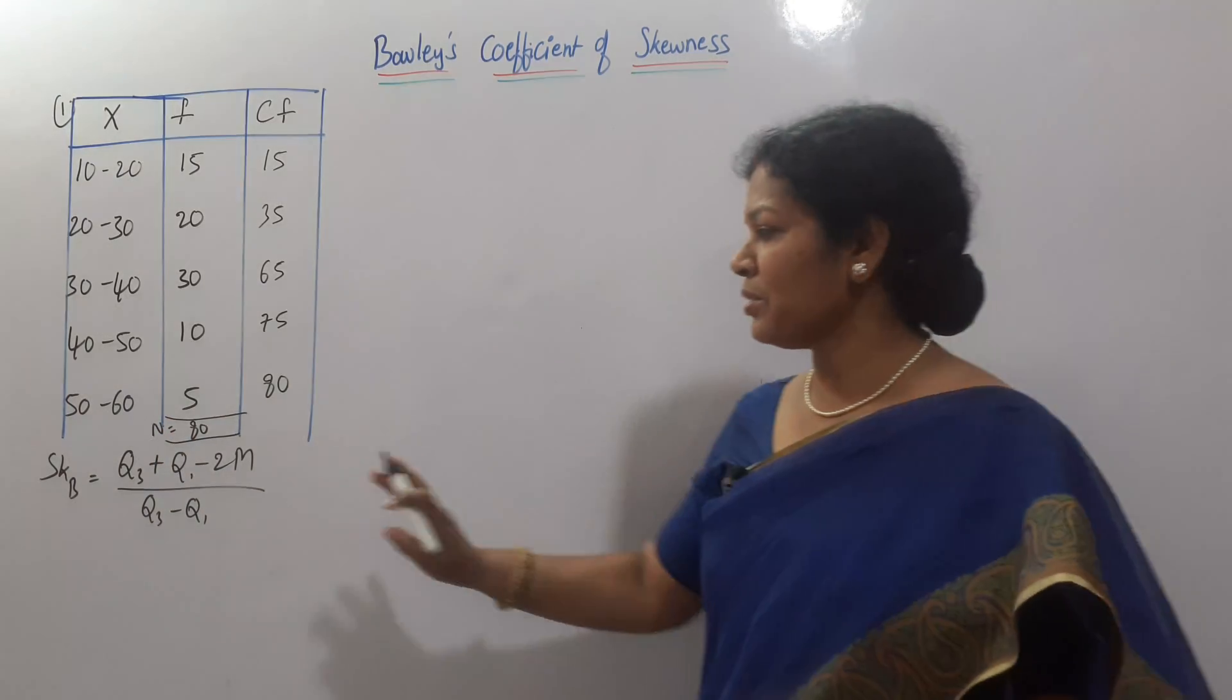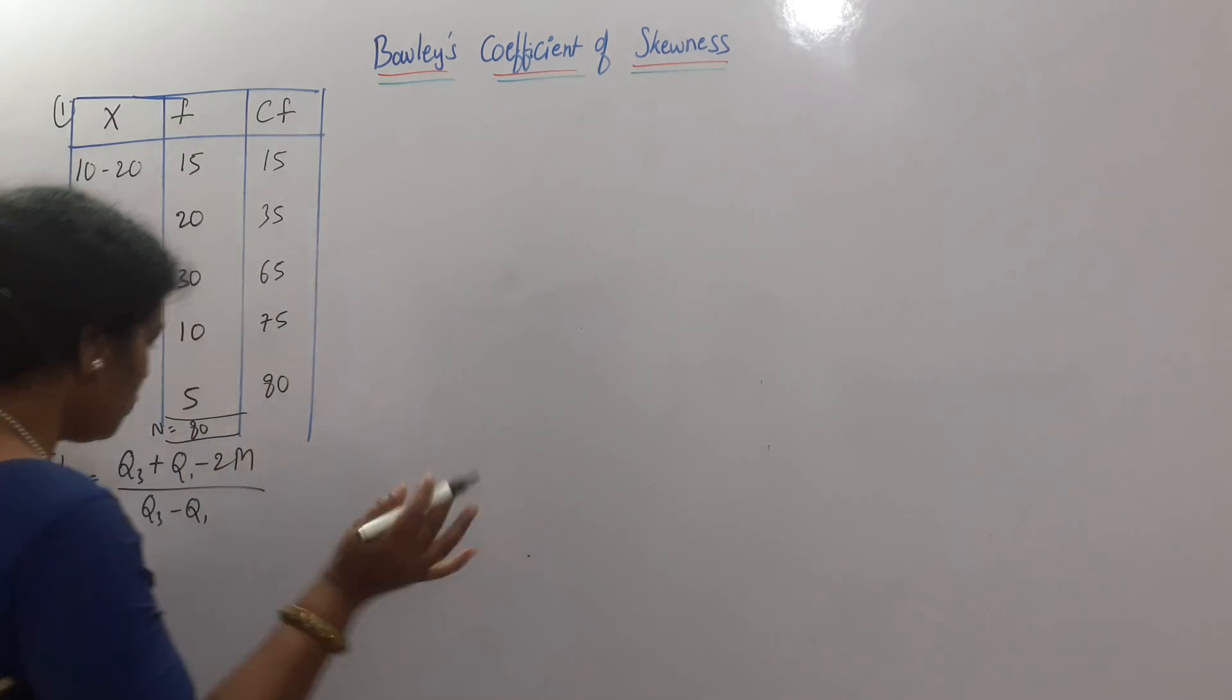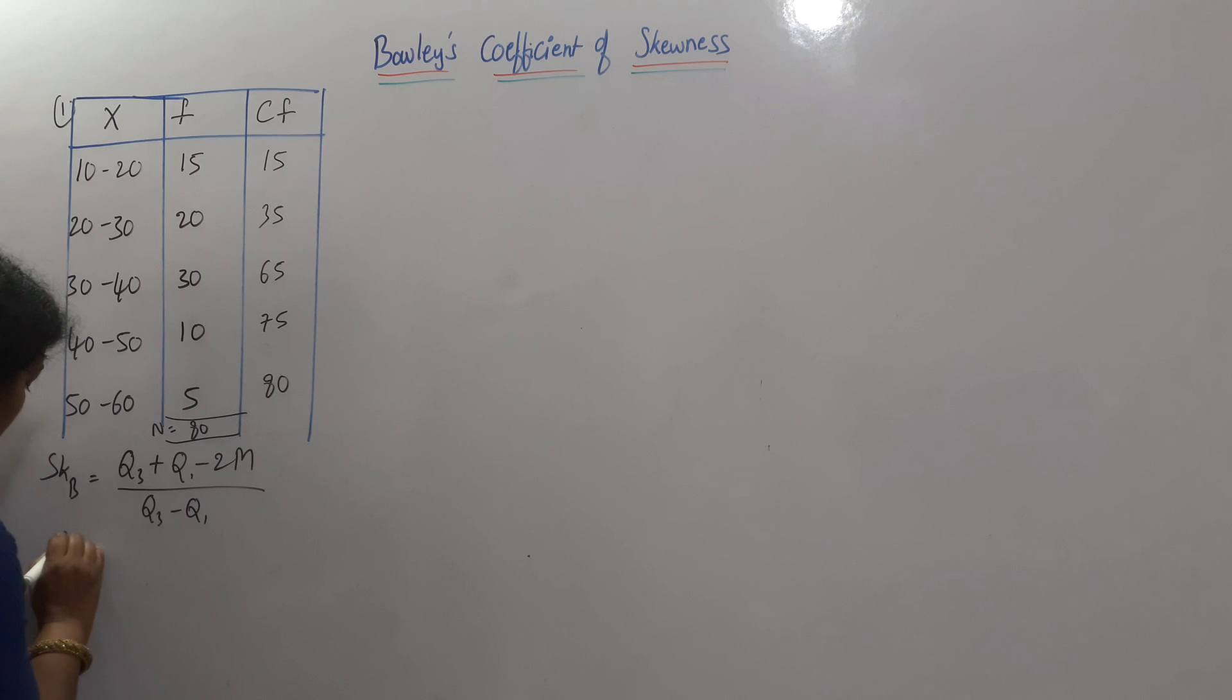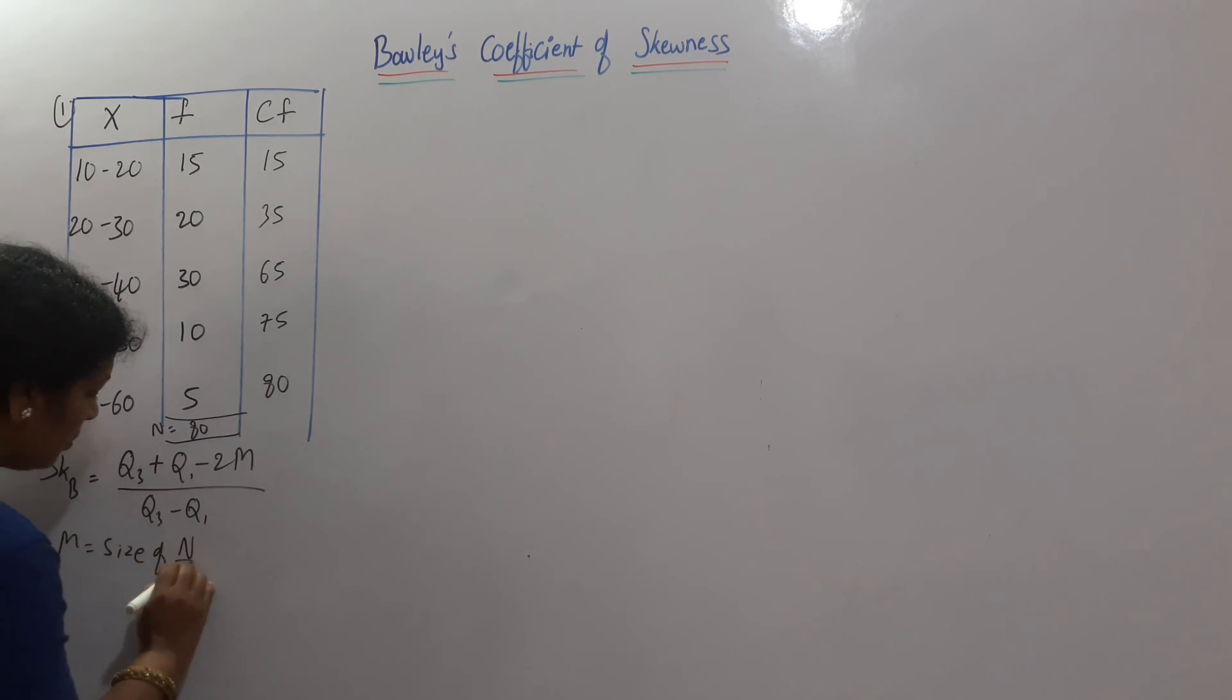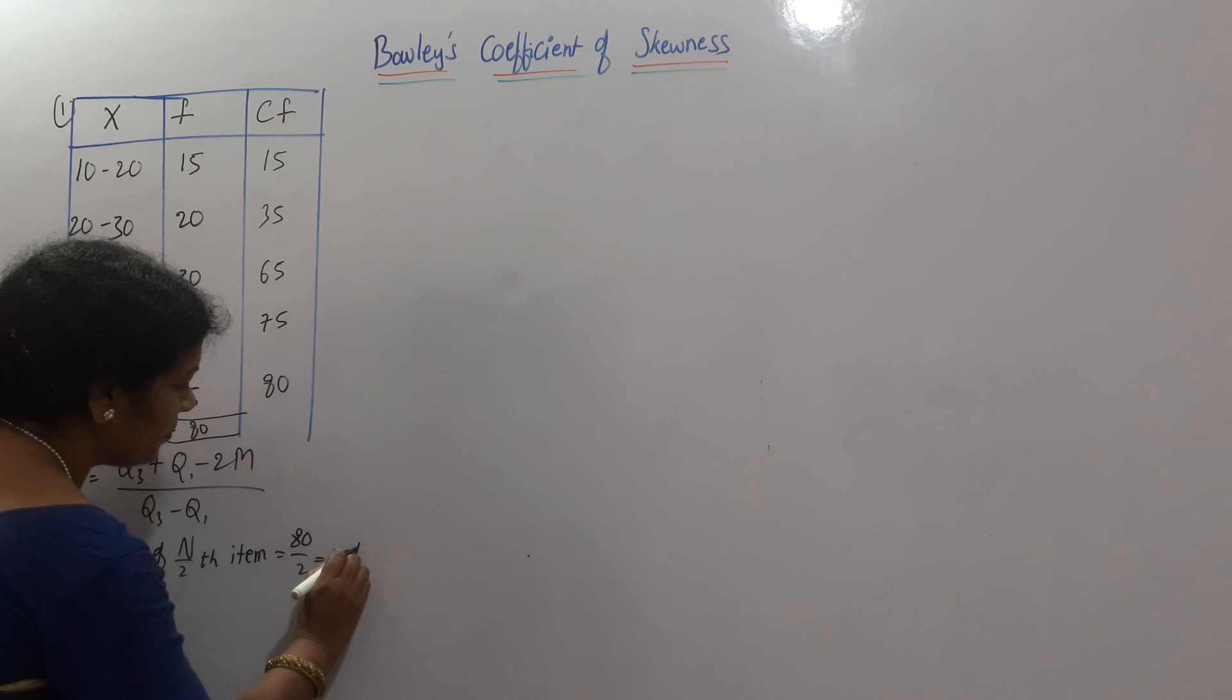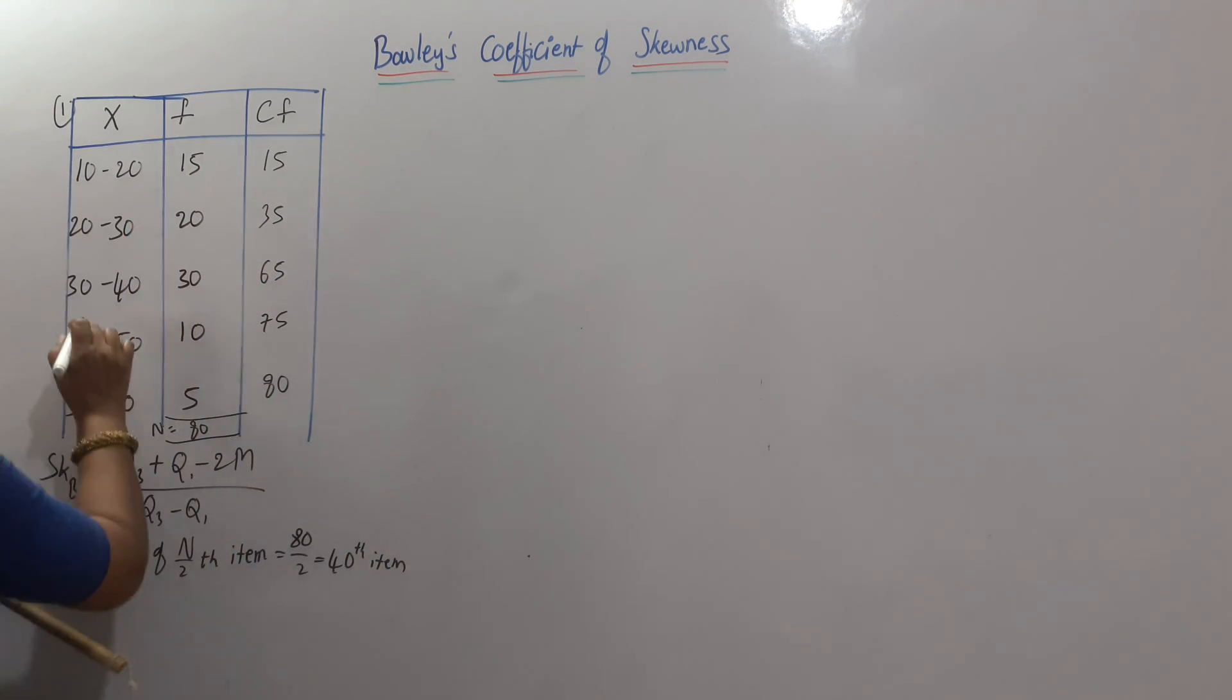Now, Q1 we will see. First, what do we see? Median. So, median is equal to, two formulas are there. Please remember, this is continuous series. First formula is median is equal to size of N by 2th item. N is here 80. 80 by 2 means 40th item.